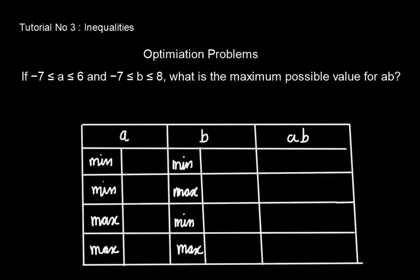Let's fill this table. The minimum value of a is -7, maximum is 6. In the same way for b: notice that we take minimum, maximum, minimum, maximum, so that we exhaust all combinations. For b, minimum is -7, maximum is 8. Now we get the multiplication of combinations.